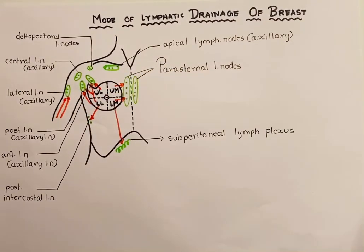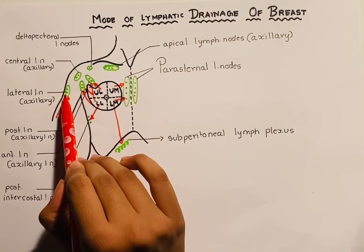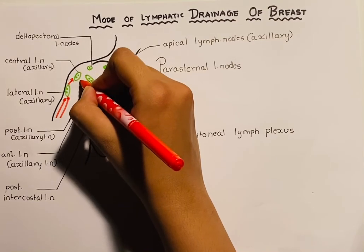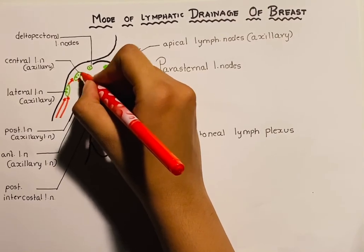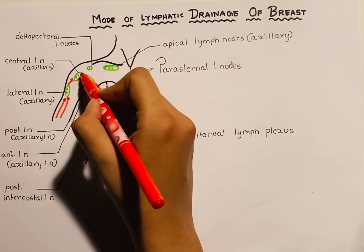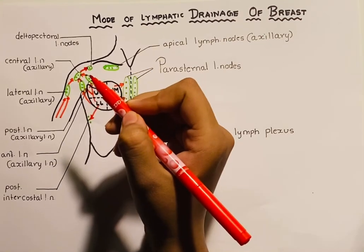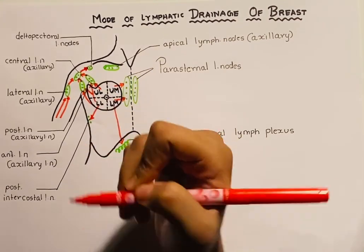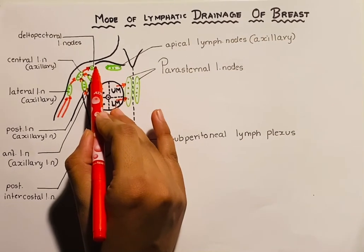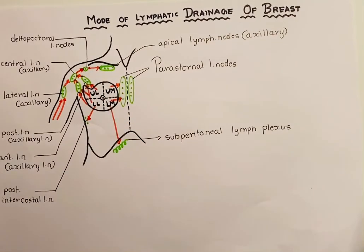Now the lymph from the anterior, posterior, and lateral group of axillary lymph nodes is in turn drained into the central group of axillary lymph nodes. The lymph from the central group is then drained into the deltopectoral group of lymph nodes, and the lymph from the deltopectoral group is in turn drained into the apical group of lymph nodes.